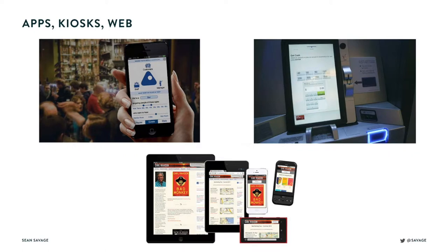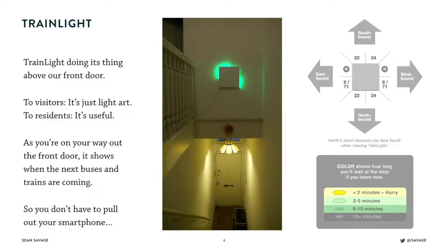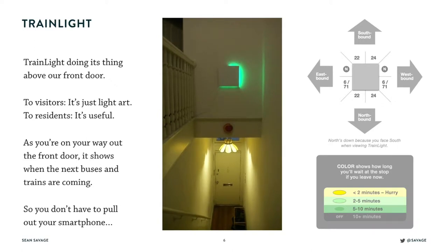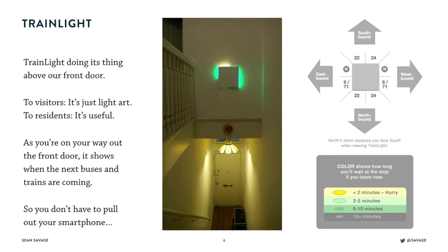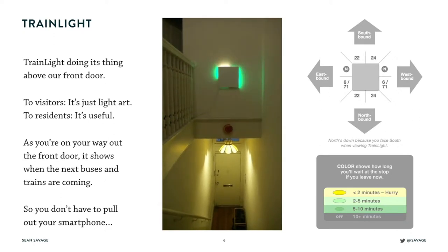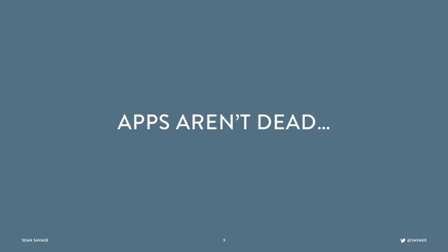For most of my career I did design — a lot of app design, as well as kiosks and web. So I'm not completely anti-app. But I've also done other stuff. For instance, this is kind of an Internet of Things thing. It looks to visitors like art or something weird. But for the people who live in the house and are familiar with what it means, it'll tell you — as you're walking out the door — what is the next bus to go downtown or to the beach, wherever you're trying to go. Just by a glance you know what it is. It's thinking about how to get away from pulling out your smartphone.